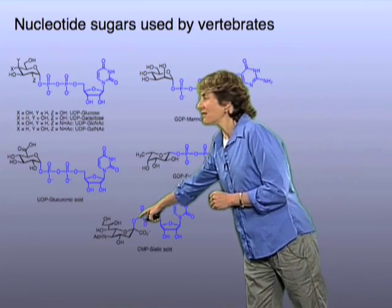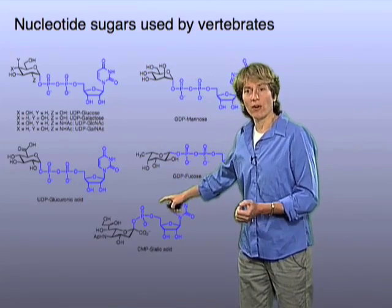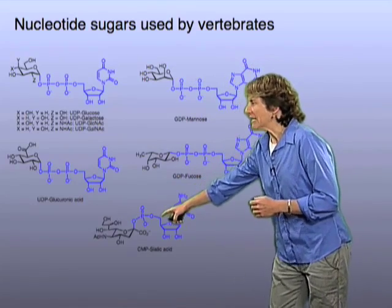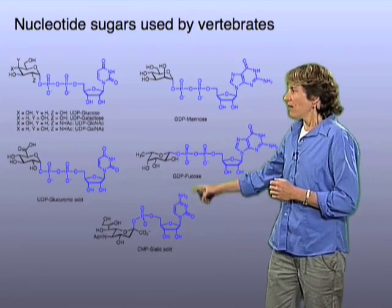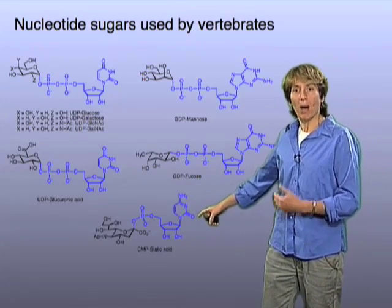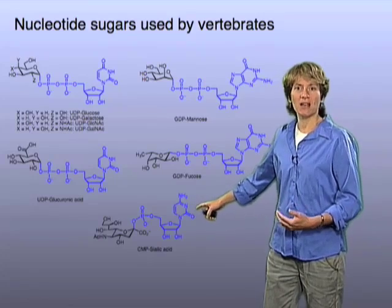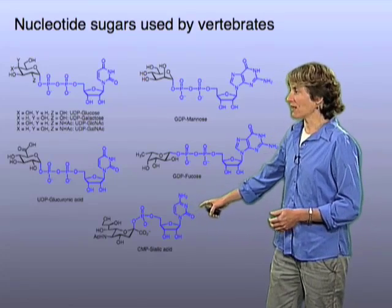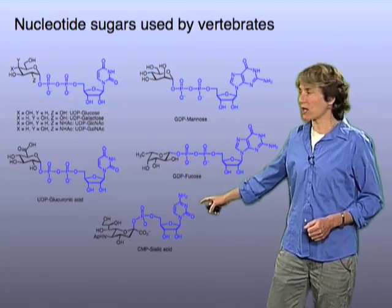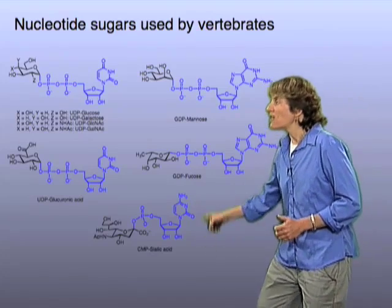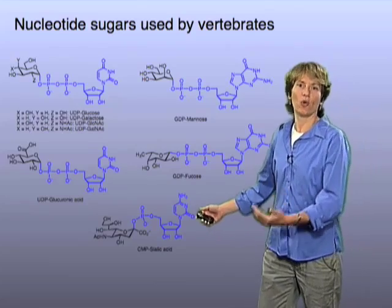Sialic acid stands alone in vertebrate biology, in that its activated form is linked to a cytidine monophosphate, or CMP — CMP-sialic acid. There is a family of sialyl transferases that all use this as what we call a glycosyl donor.